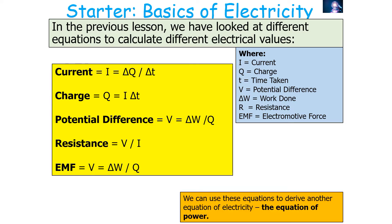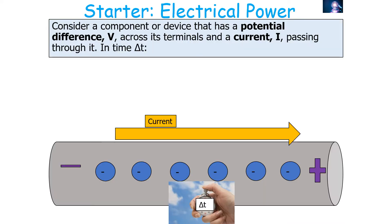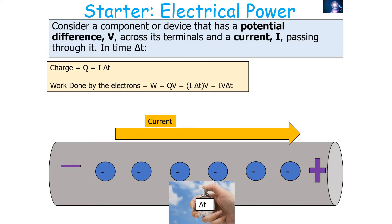We can use these equations to derive another equation for electrical circuits — the equation for power. Consider a component with a potential difference V across its terminals and a current I passing through it. In a time delta t, charge equals current times time, and the work done by the electrons equals charge times potential difference.